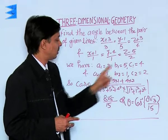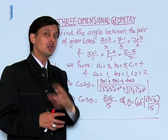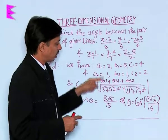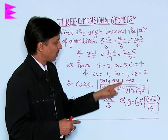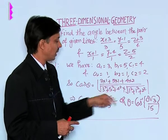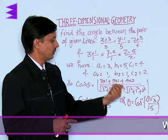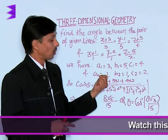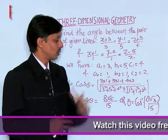If you substitute the values in this result, 3 into 1 plus 5 into 1 plus 4 into 2, divided by root of 3 square plus 5 square plus 4 square, into root of 1 square plus 1 square plus 2 square.